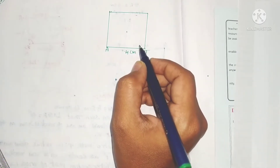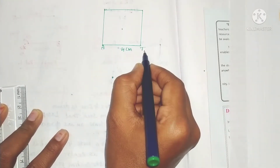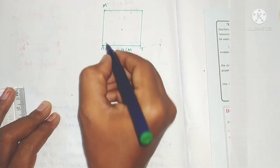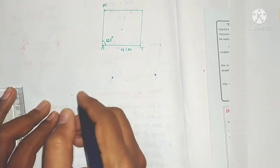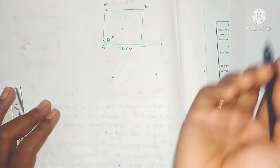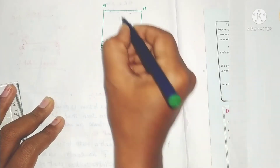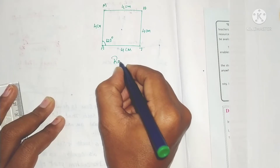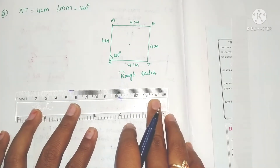AT is 4 centimeters and angle MAT is 120 degrees. Since it's a rhombus, all four sides are equal, so every side is 4 centimeters. This rough sketch is our first step.